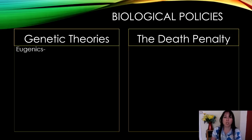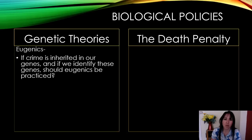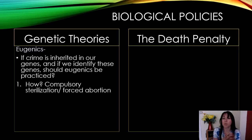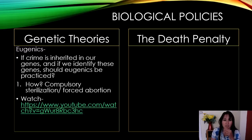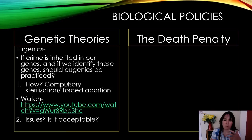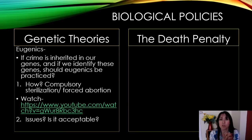Within biological policies you also have genetic theories such as eugenics. If crime is inherited in our genes and we identify these genes, should eugenics be practised? This links to things like sterilisation — if a criminal has something genetic they might pass on to children, should they be sterilised or stopped from having children? These are extremely controversial ideas. This is very Nazi-esque — the Nazis used sterilisation on disabilities, and we're thinking about this in the context of crime. Is it ethical practice?